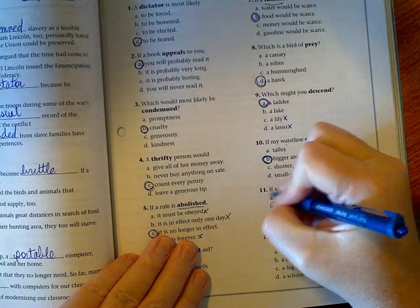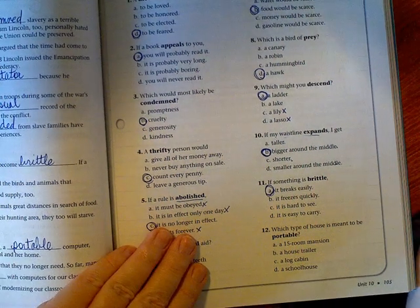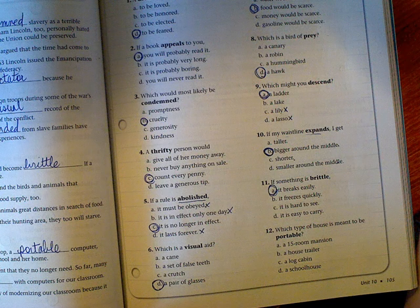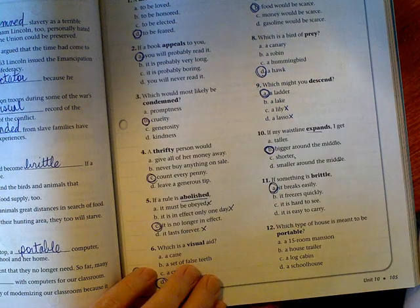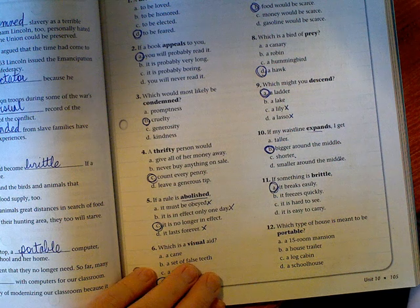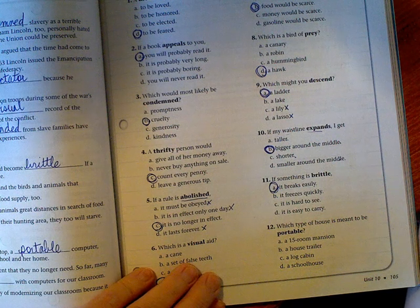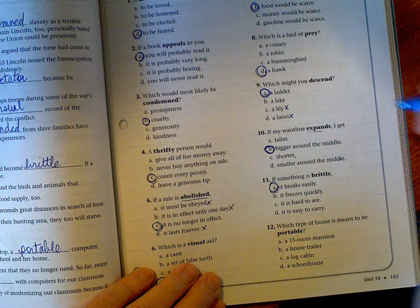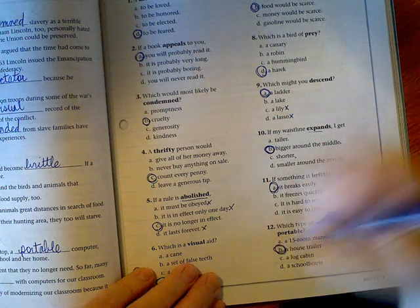Last one. Which type of house is meant to be portable? A 15-room mansion? That would be hard to move. A house trailer? Hmm, I feel like those are on wheels. A log cabin? Or a schoolhouse? Letter B is the best answer. So up here at the top, however many you got correct over 12, box it in for me.